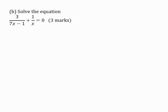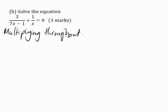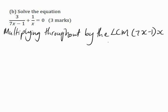In order to simplify this equation, I will multiply throughout by the LCM. The LCM is the product of the denominators, so the LCM here is (7x minus 1) multiplied by x. Notice that the LCM will only end up in the numerator, because you are multiplying throughout by (7x minus 1) multiplied by x all over 1, and 1 multiplied by anything is itself, so you will just end up with the denominators cancelling.